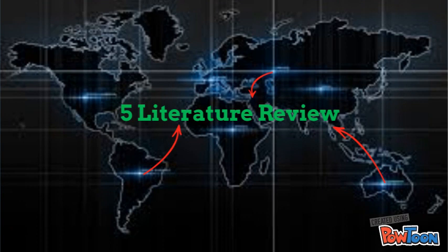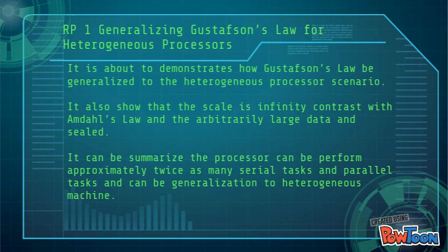It demonstrates how Gustafson's Law can be generalized to the heterogeneous processor scenario. It also shows that the scale is infinite, in contrast with Amdahl's Law, for arbitrarily large data. In summary, a processor can perform approximately twice as many serial tasks as parallel tasks, and the law can be generalized to heterogeneous machines.